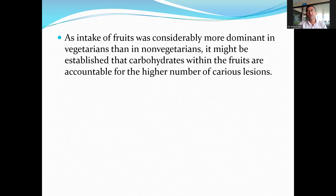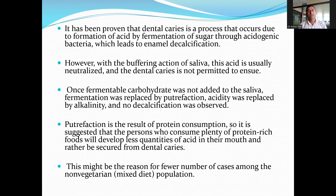It may be established that carbohydrates within foods are accountable for the higher number of caries lesions. Dental caries occurs due to acid formation by fermentation of sugars by acidogenic bacteria, leading to enamel decalcification. However, with the buffering action of saliva, this acid is usually neutralized and dental caries is not permitted to occur. When fermentable carbohydrates are not present, fermentation is replaced by putrefaction, acidity is replaced by alkalinity, and no decalcification of tooth tissue is observed. Putrefaction is the result of protein consumption. It is suggested that persons who consume plenty of protein-rich foods, as in the non-vegetarian diet, develop less acid in their mouth and are thus protected from dental caries — which may explain the fewer caries cases among non-vegetarians.